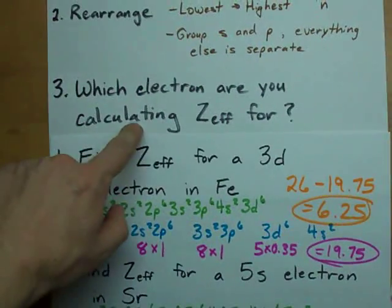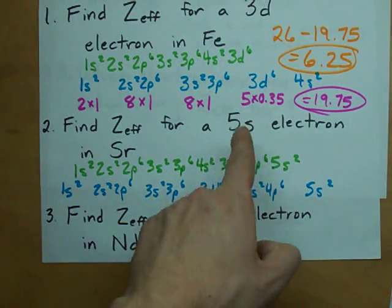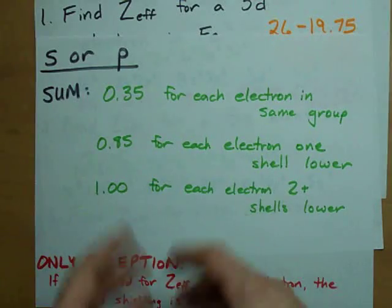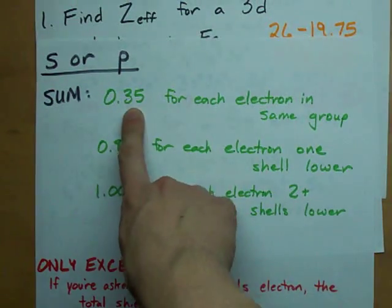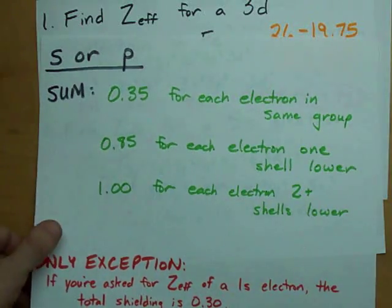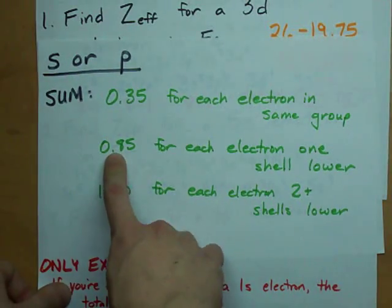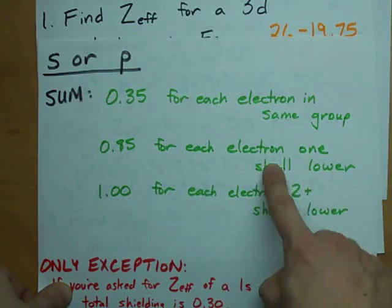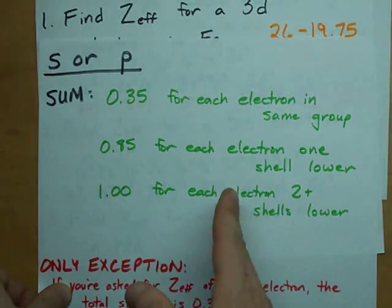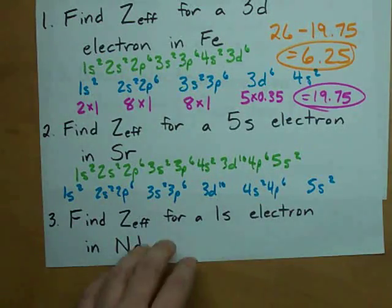And which electron are you calculating effective nuclear charge for? For an s electron, you follow these rules. You add up 0.35 for each electron in the same group. Same rule as before. But here, you're also going to add up 0.85 for each electron one shell lower than the one you're talking about. And 1 for every electron two or more shells lower.